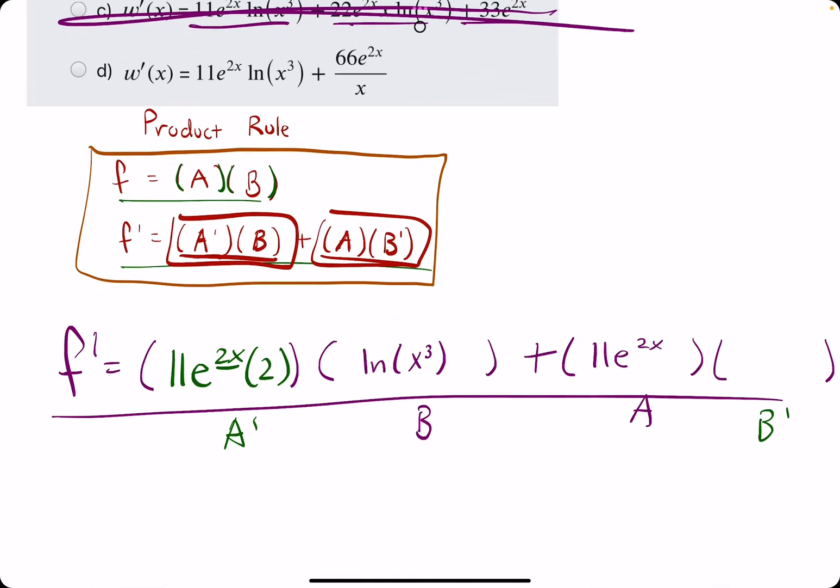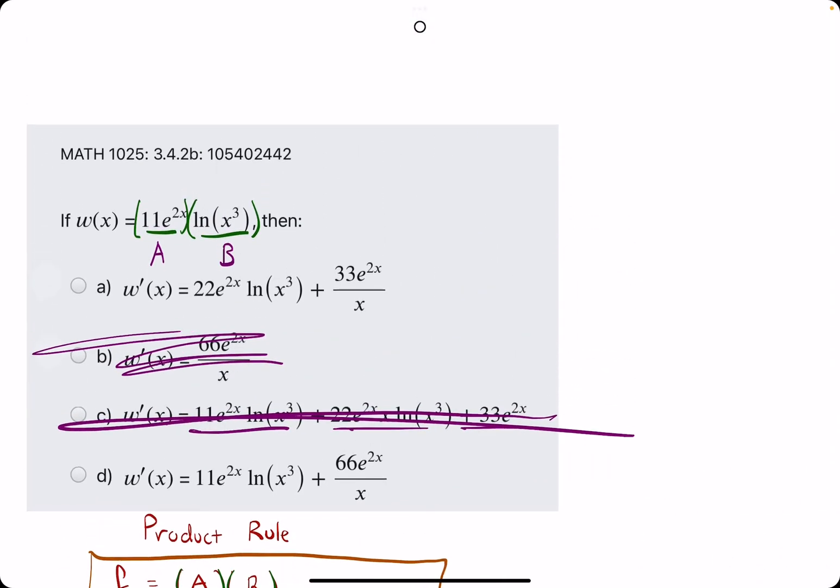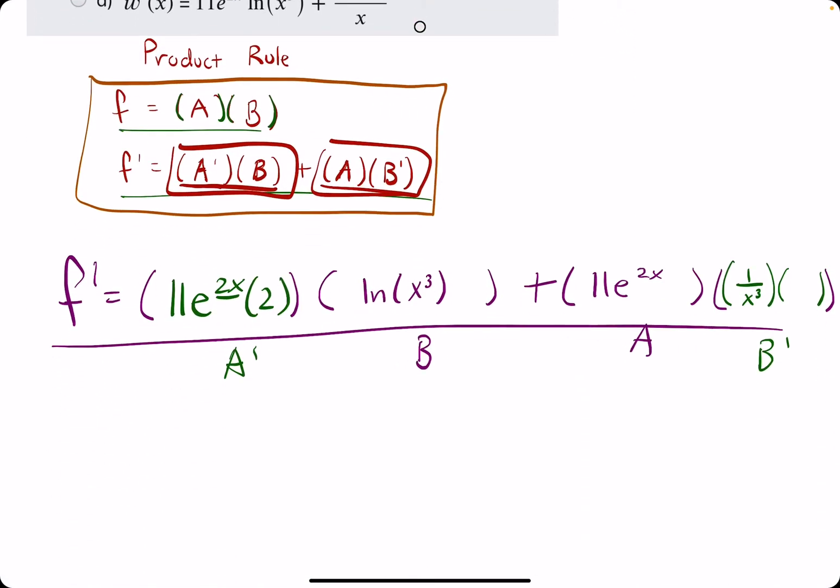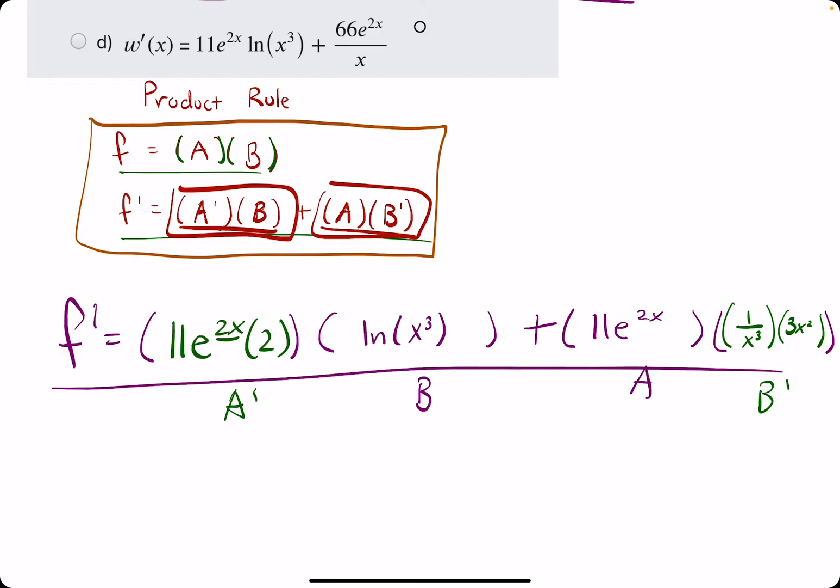B prime is the derivative of ln of x cubed. ln of x cubed, ln of anything, has a derivative of 1 over that anything. And then, we multiply by the derivative of the inside. The inside is x cubed. x cubed has a derivative of 3x squared. This is our derivative.